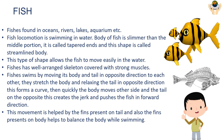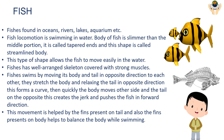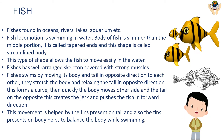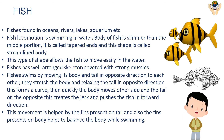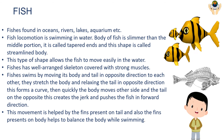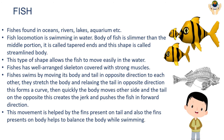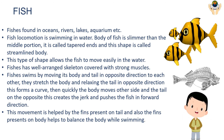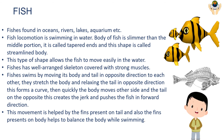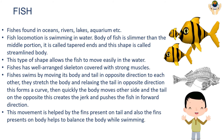Fish: fish are found in oceans, rivers, lakes, and aquariums. Fish locomotion is swimming. The body of a fish is slimmer at the ends than the middle portion — this shape is called streamlined, with tapered ends. This shape allows the fish to move easily in water. Fish have a well-arranged skeleton covered with strong muscles. Fish swim by moving their body and tail in opposite directions. They stretch the body and relax the tail in the opposite direction, forming a curve. Then quickly the body moves to the other side, creating a jerk that pushes the fish forward. This movement is helped by the fins on the tail, and fins on the body help balance while swimming.